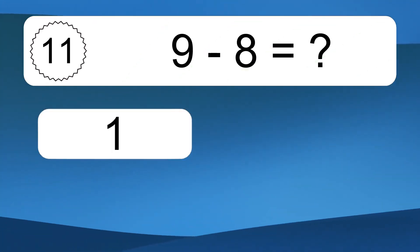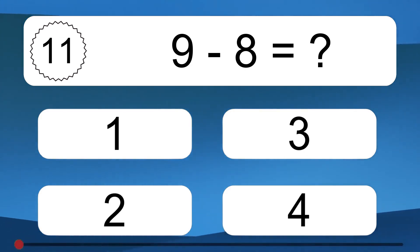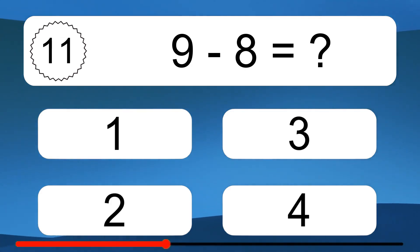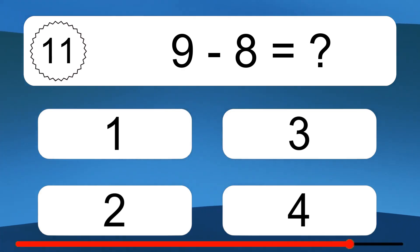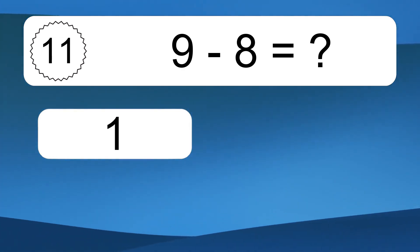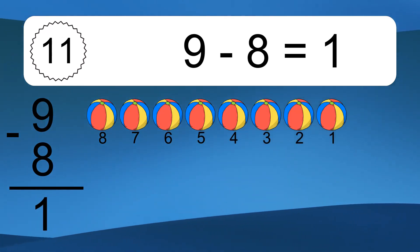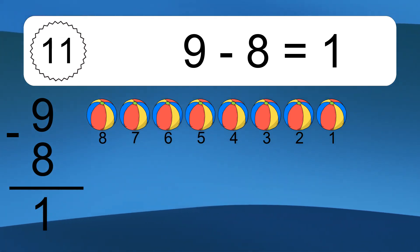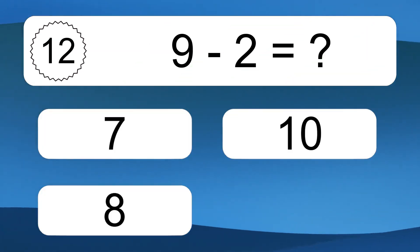9 minus 8 equals what? 9 minus 8 equals 1. Let's count it: 8, 7, 6, 5, 4, 3, 2, 1.